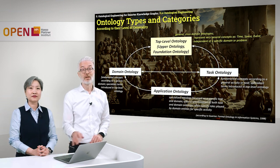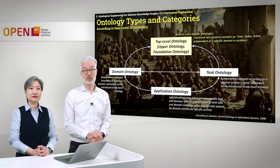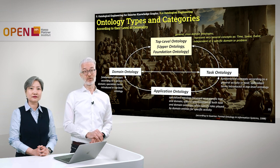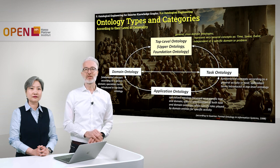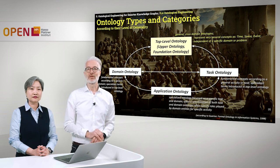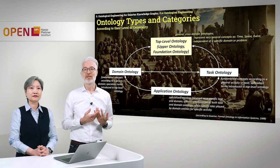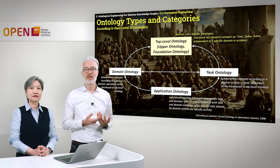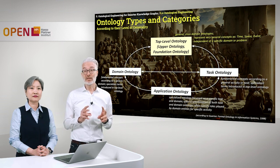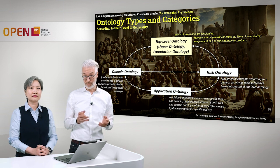Let's start with the top ones. These are the so-called top-level ontologies, upper ontologies, or foundation ontologies. They are rather general and cross-domain ontologies. They represent very general concepts, for example like time, space, and event. They are independent of a specific domain or a specific problem.